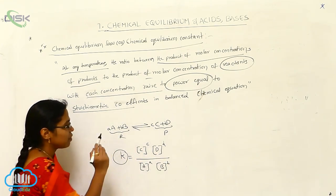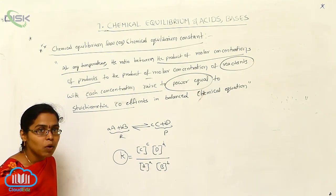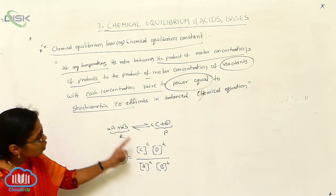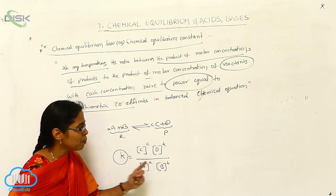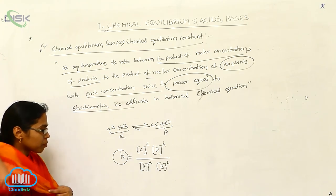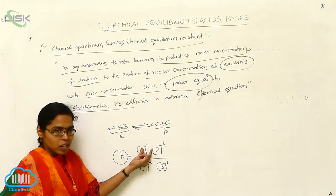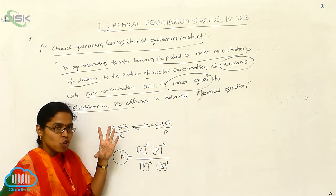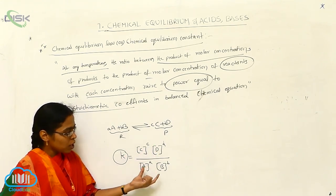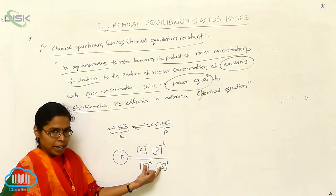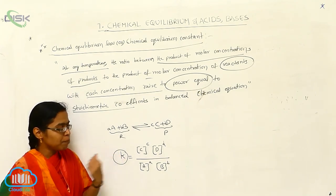So now it is called as equilibrium constant — what is called as equilibrium constant. So: C to the power c, D to the power d, and A to the power a, B to the power b. Simple definition.